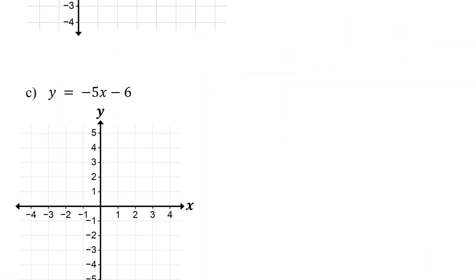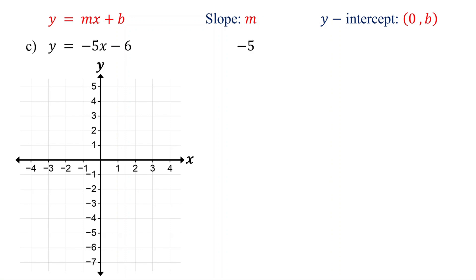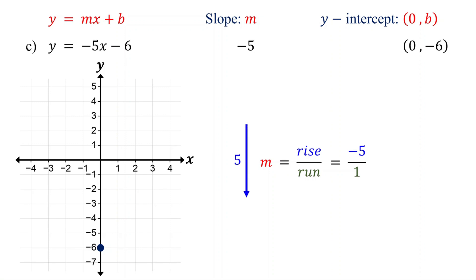Now let's try something a bit more interesting. What if the slope takes you off the coordinate plane? How do we handle that? As always, start by identifying the slope and the y-intercept. The slope is negative 5, and the y-intercept is (0, -6). Next, plot the y-intercept. Note that the slope of negative 5 can be written as -5/1, since dividing any number by 1 doesn't change its value. This makes it easier to work with as a rise over run fraction. So the rise is 5 units down, and the run is 1 unit to the right. However, moving down 5 units from the y-intercept takes us off the coordinate plane.